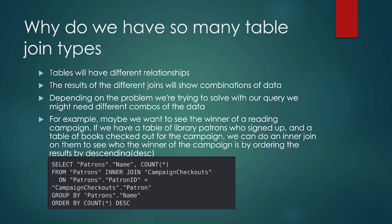We group by patrons dot name and order by count descending. This gives us all patron names who signed up for the campaign, ordered descending so we can see who checked out the most books — assuming if you checked out a book you read it — so we can see who's the winner and give them a congratulations.